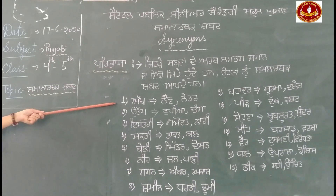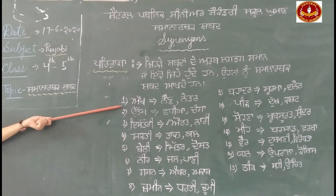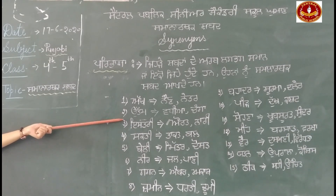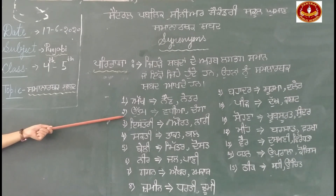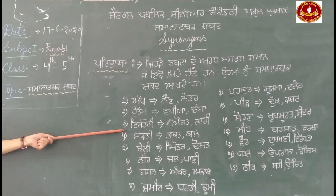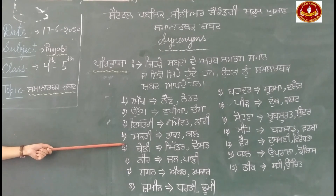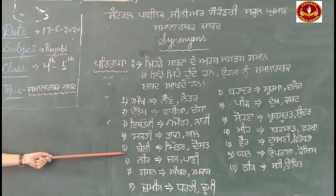ਨੰਬਰ 1: ਅੱਖ, ਨੇਤਰ। ਨੰਬਰ 2: ਉੱਤਮ, ਵਧੀਆ, ਚੰਗਾ। ਨੰਬਰ 3: ਇਸਤਰੀ, ਔਰਤ, ਨਾਰੀ। ਨੰਬਰ 4: ਸ਼ਕਤੀ, ਤਾਕਤ, ਬਲ। ਨੰਬਰ 5: ਬੇਲੀ, ਮਿੱਤਰ, ਦੋਸਤ।